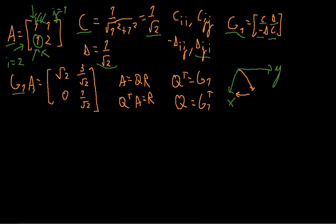We apply G1 to A and get the following result: as expected, we get 0 here, and we get √2, 3/√2, and 1/√2. This is now our upper triangular matrix R.